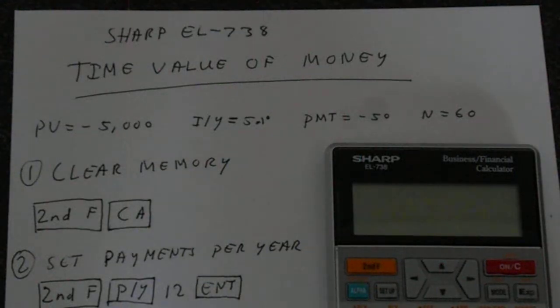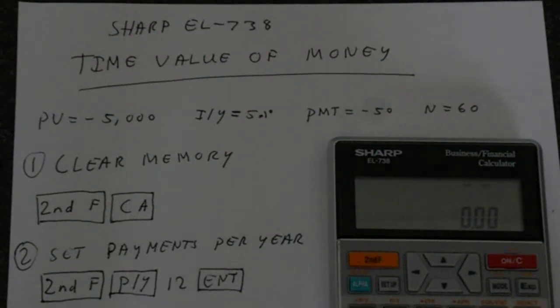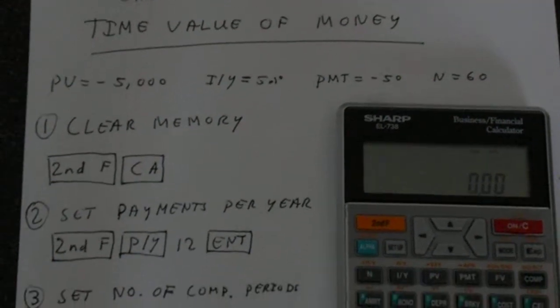First step is always clear the memory. So your second function, CA, clears the memory. It doesn't clear all the memories, but it's sufficient for our purposes. You can use the MCLEAR for other calculations.